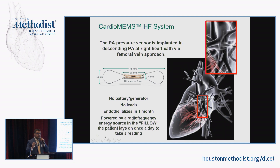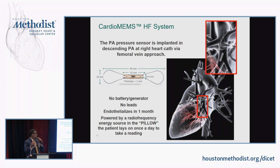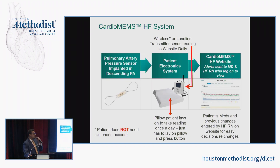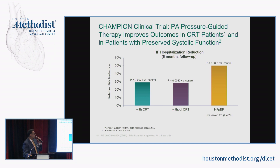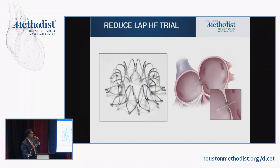CardioMEMS is an implantable PA sensor implanted in the left pulmonary artery. For patients with recurrent heart failure admissions, implanting a CardioMEMS device and titrating diuretics based on the pressures has shown a 50% relative risk reduction in heart failure hospitalization. This is one intervention that can meaningfully reduce heart failure hospitalizations.